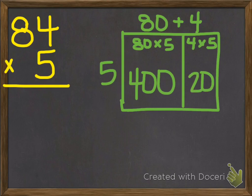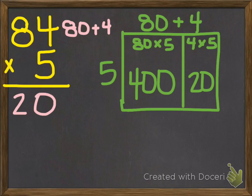Now if we go over to our algorithm, let's see how this lines up. Remember, I'm thinking of 84 as 80 plus 4. So 4 times 5 is 20. So I write 20. Now, remember this 8 is actually 80. So I'm going to do 5 times 80, which is 400.